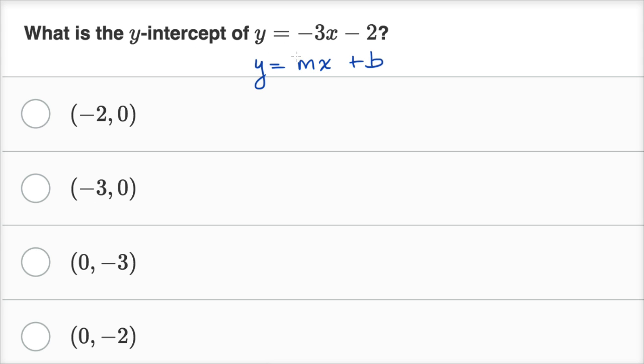where m, our slope, is given right over here, negative three, but they're not asking for our slope. They're asking for the y-intercept. Well, the y-intercept is given by b here, so b is negative two.